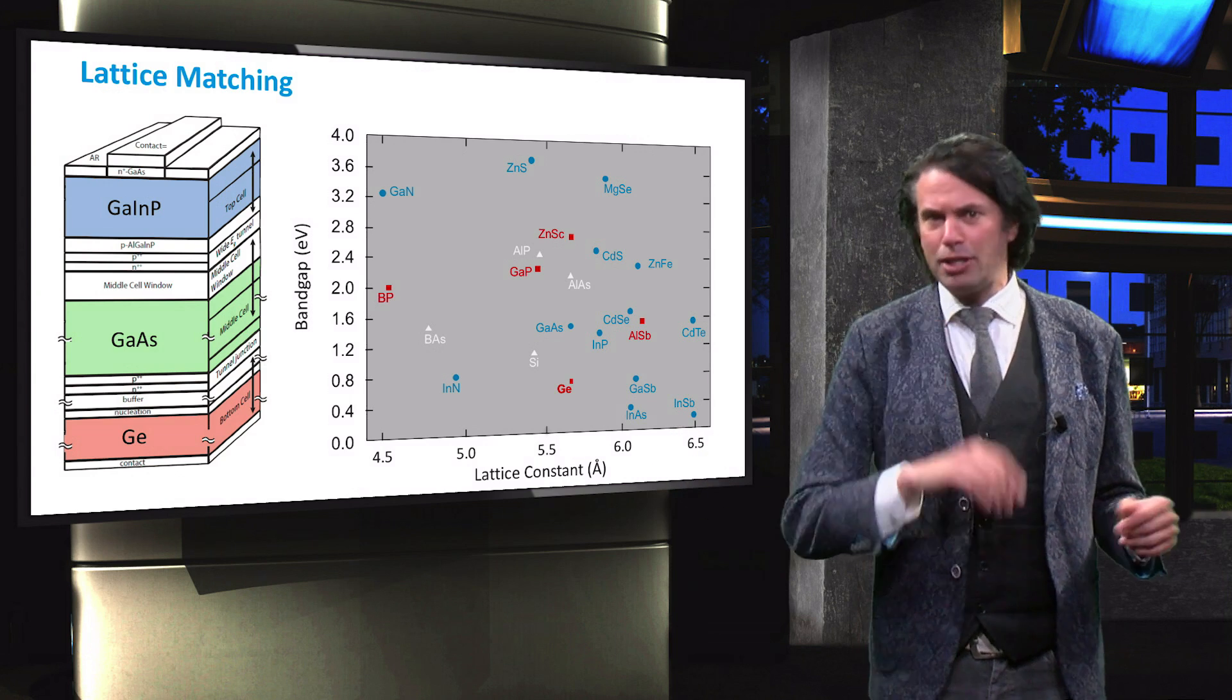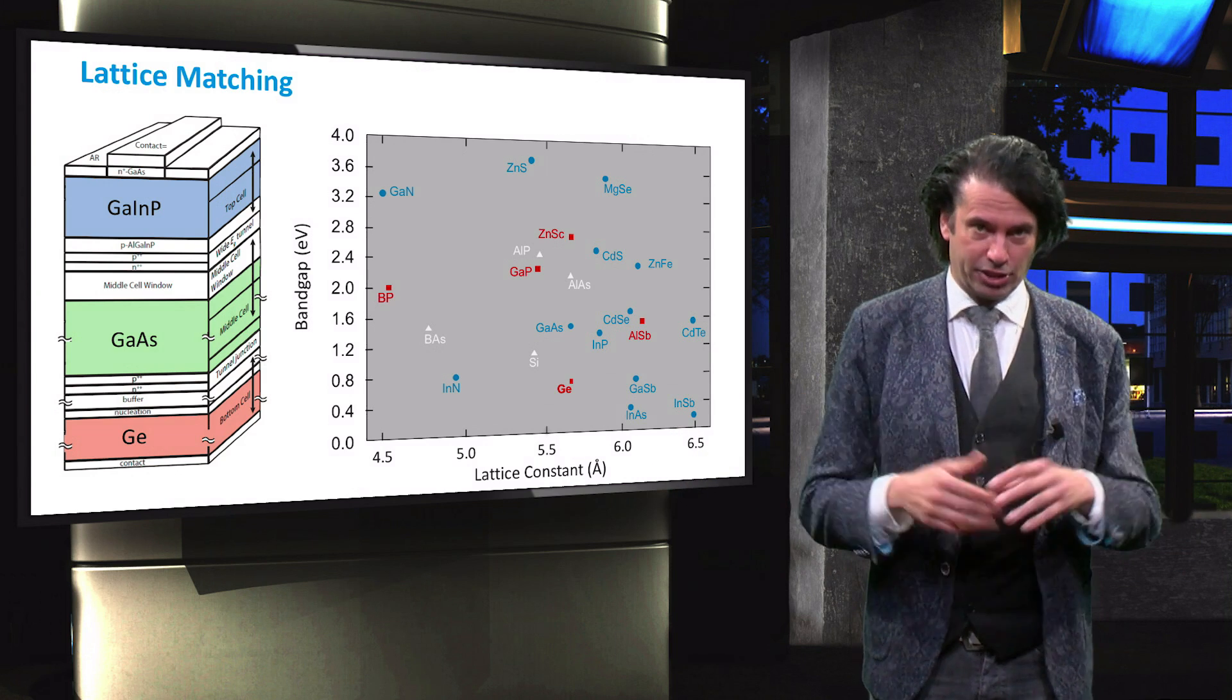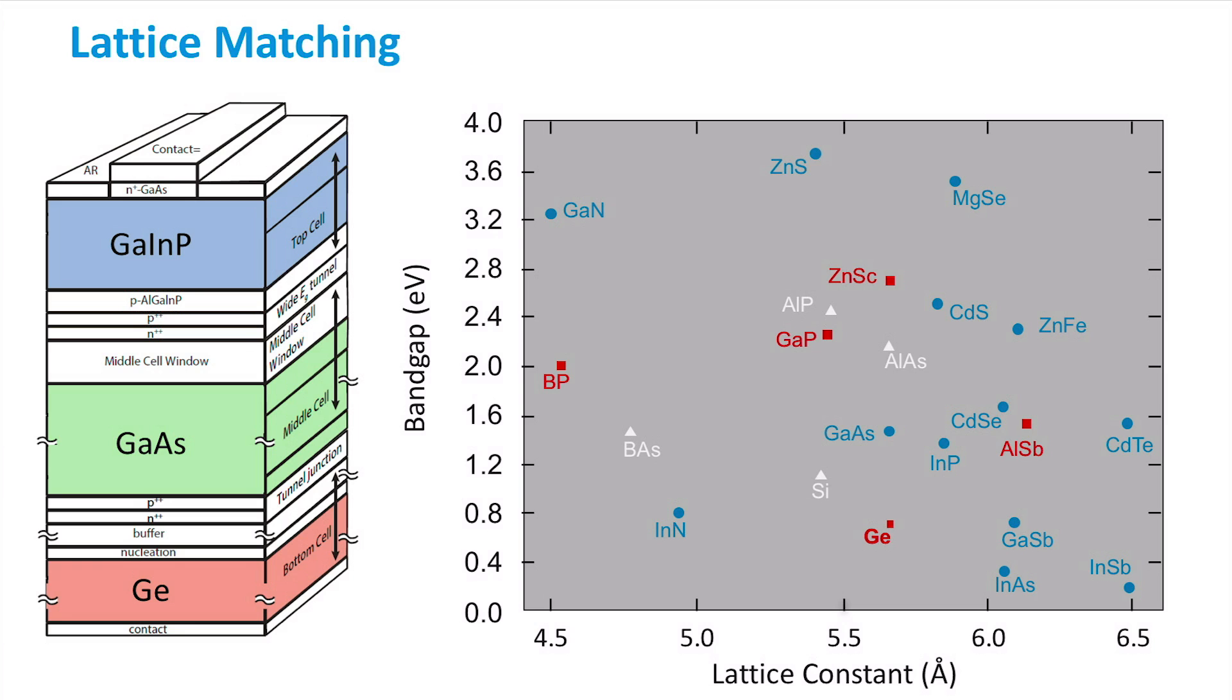Let's use the typical 3-5 devices as an example. The bottom cell is germanium and the middle cell is gallium arsenide. As we can see, these materials have similar lattice constants and therefore are lattice matched.